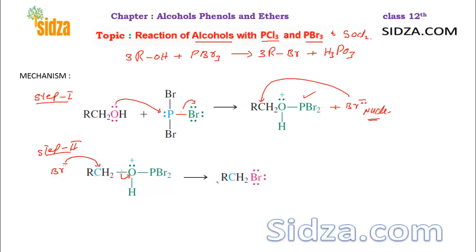What you get is RCH2Br — an alkyl halide — plus H-O-phosphorus with two bromine atoms. In these two steps, the alcohol molecule attacks the phosphorus, one bromine is released as Br⁻, and then that Br⁻ attacks the carbon in step two.